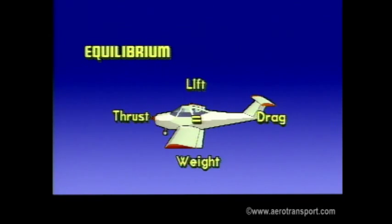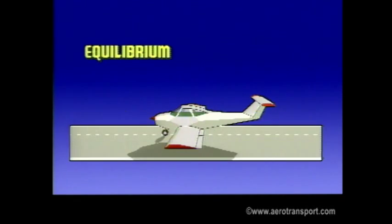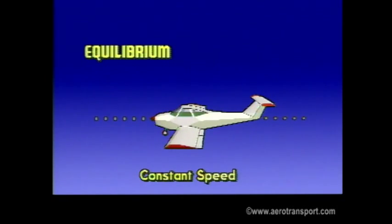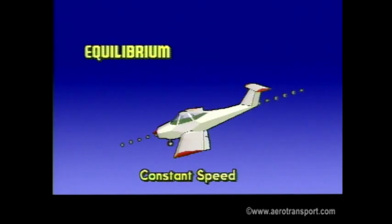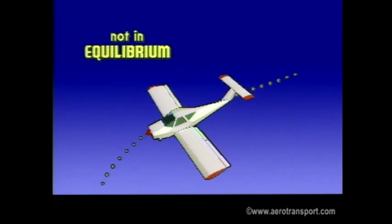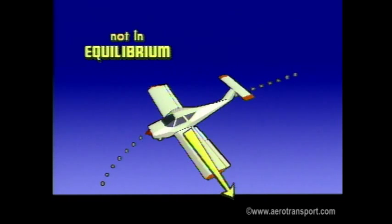We now move to the concept of equilibrium — a state in which an object is neither accelerating nor decelerating. Examples would be a parked aircraft, an aircraft in straight and level flight at a constant speed, or an aircraft climbing or descending at a constant speed. A plane in a turn at constant height and airspeed, however, is not in equilibrium, because during a turning motion the plane is always accelerating towards the center of the turn.